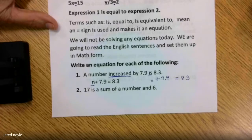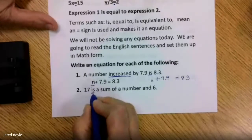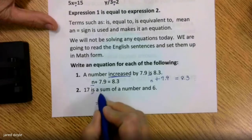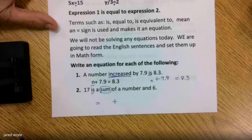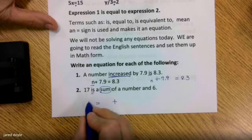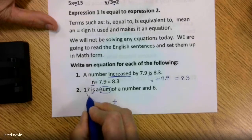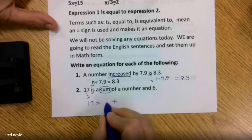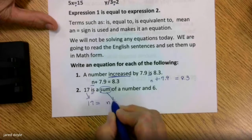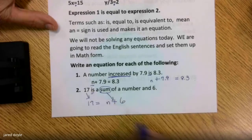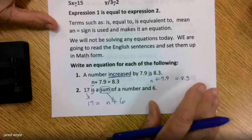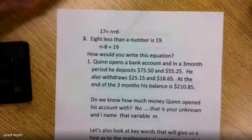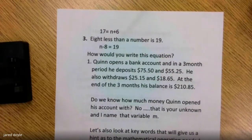Let's look at the next one. 'Is' is your equal sign. What does the term 'sum' mean? It means add. So: 17 is the sum of a number plus 6. I'm following it exactly. I created the equation from taking my English sentence into a math sentence, and as you can see, 17 equals N plus 6.